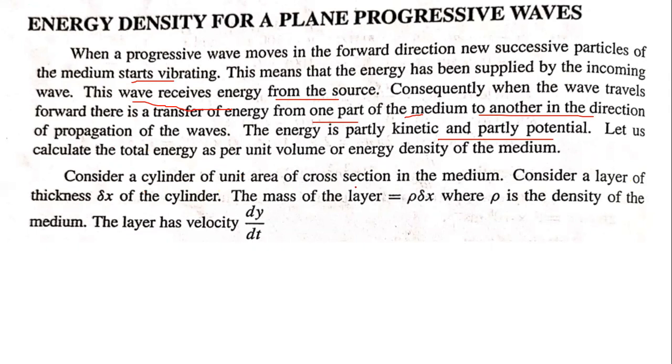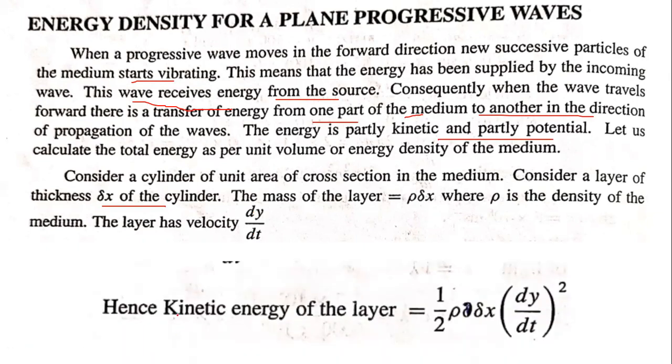Consider a cylinder of unit area of cross section in the medium and a layer of thickness delta x, where rho is the density. The layer has velocity dy by dt. The kinetic energy is half rho delta x times (dy by dt) squared.